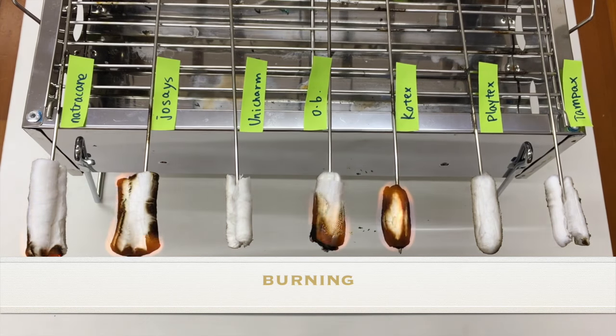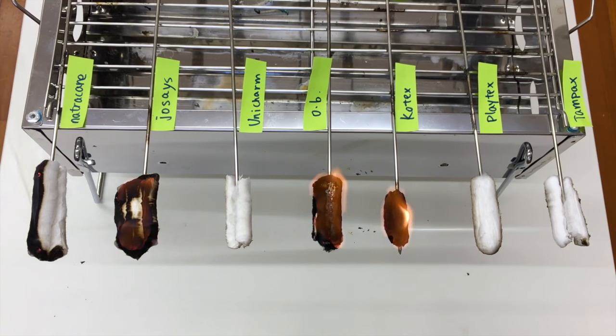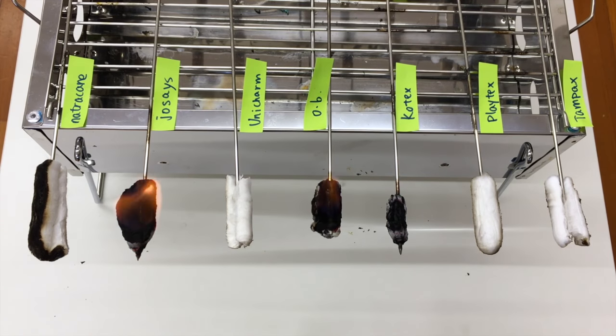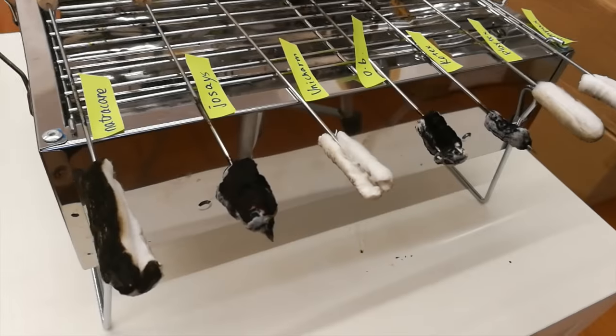Burning is a basic method which can clearly show the purity of the cotton. The 100% cotton should burn quickly and eventually the cotton will become grey or white with an ashy soft touch.